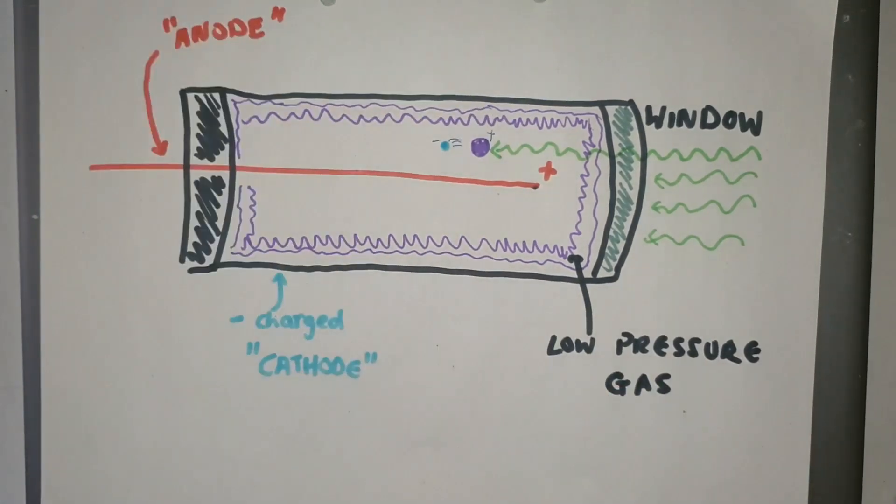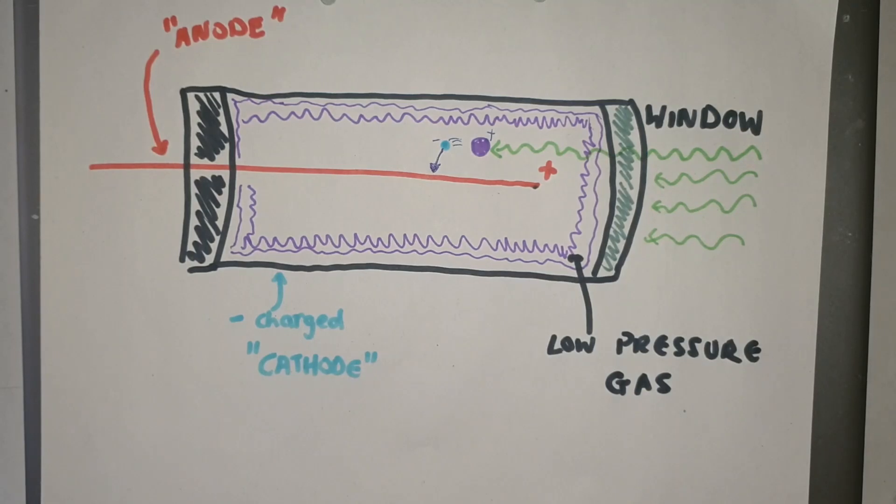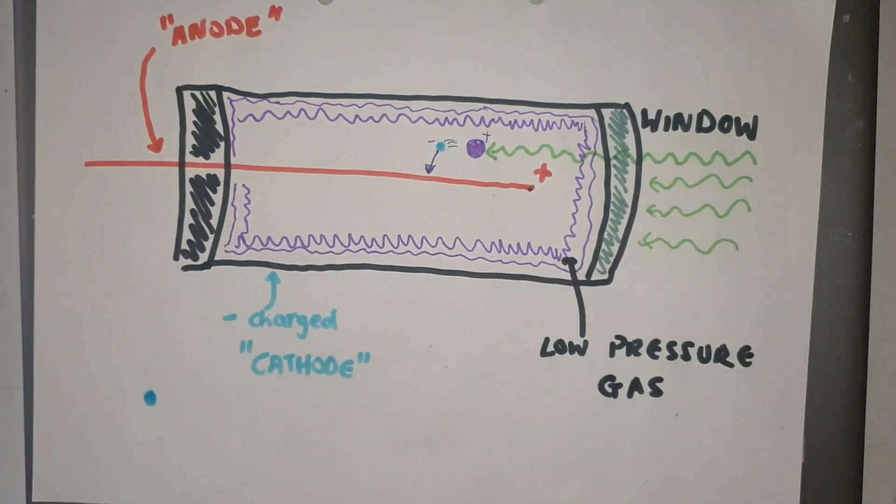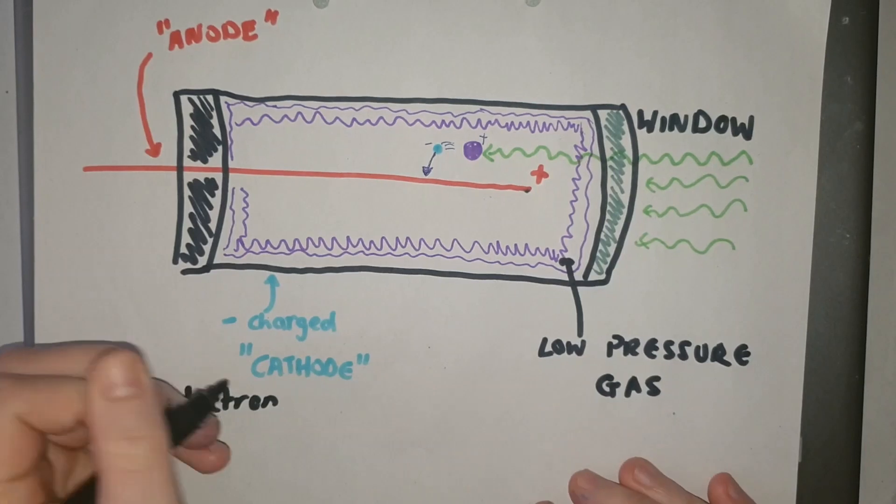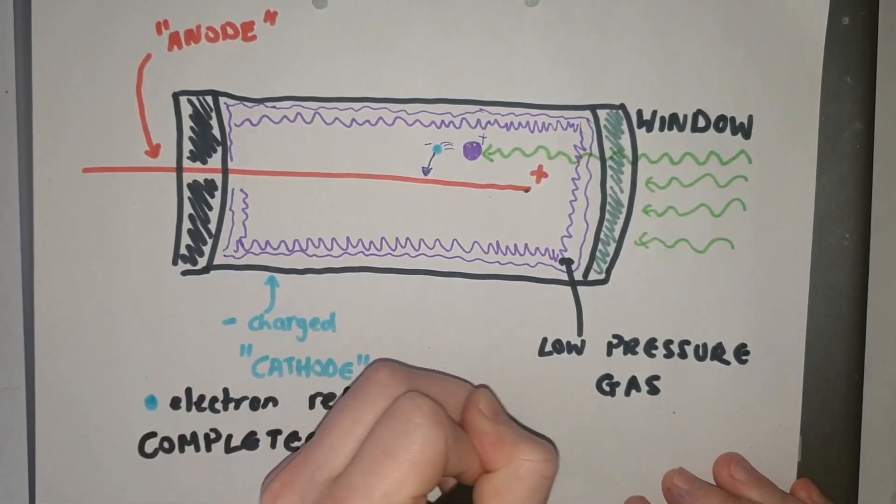Because the electron is negatively charged it will be attracted to this positively charged rod, the anode, so it will move towards it. When it gets to the anode it will complete the circuit and an electrical signal will be sent to the counter which will tell it to count one or click.